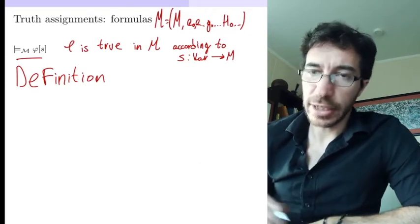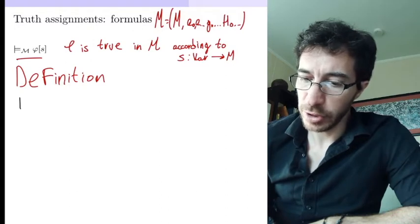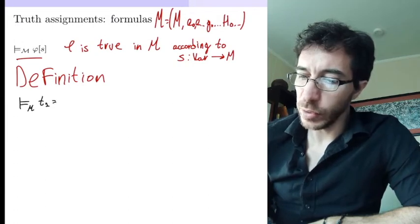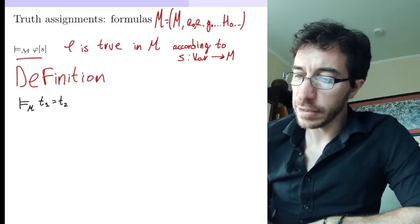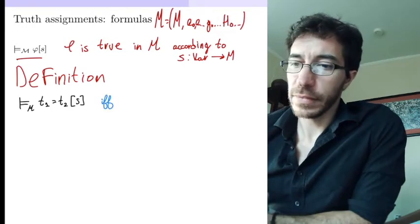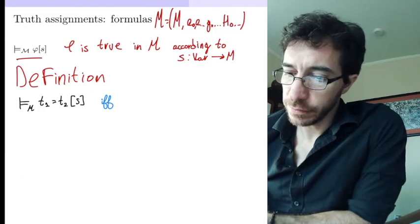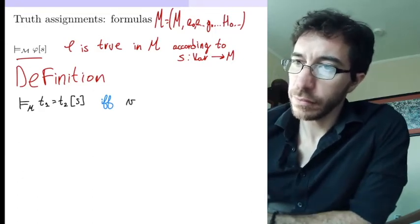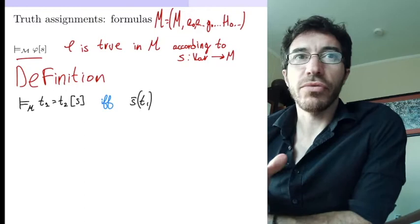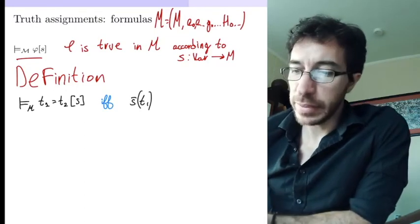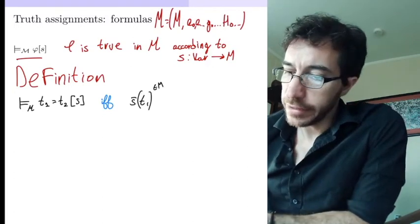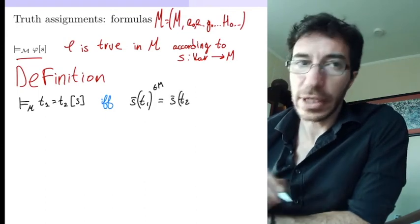Let's start with an atomic formula. Atomic formulas are of two forms. We're going to define the truth of the atomic formula t1 = t2 according to s. That's going to be the case if the value we are assigning to those terms according to our variable assignment — which is an element belonging to M — is equal to whatever value we are assigning to the other term, which also belongs to M.